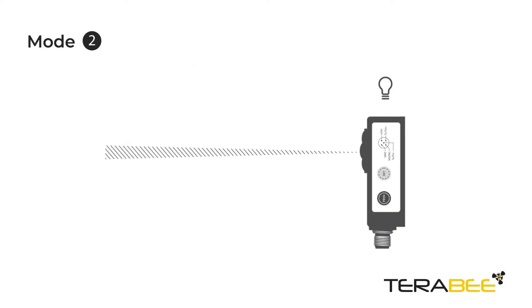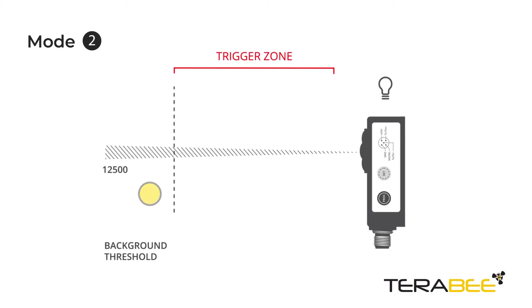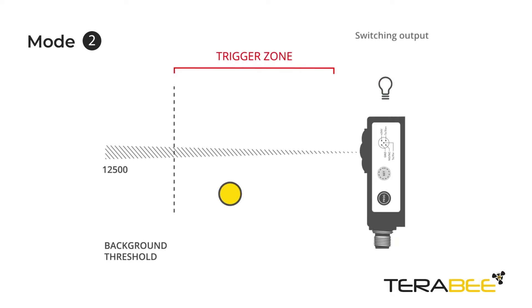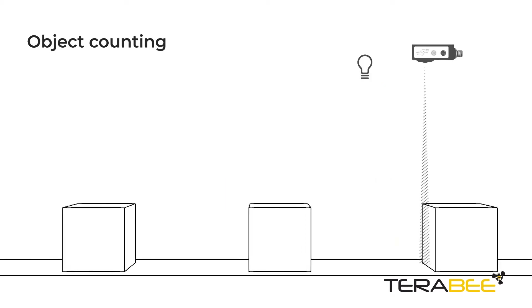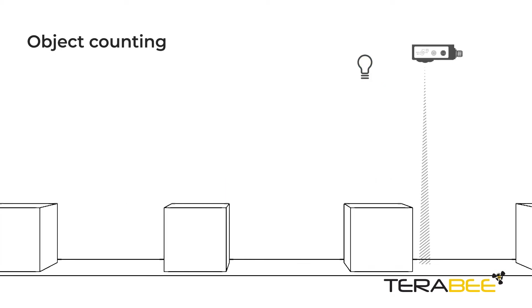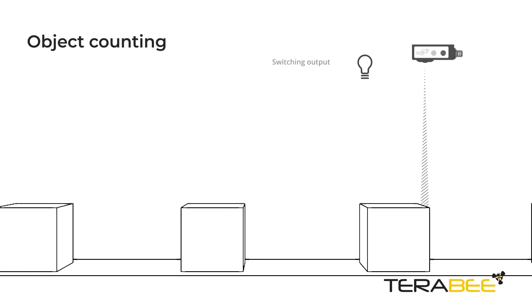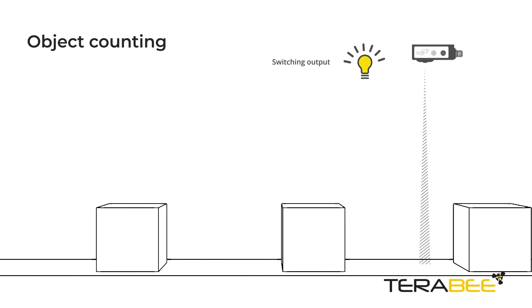In mode 2, a distance threshold is taught in. A switching output is only triggered once an object has left the sensor's threshold area. This is used for simple counting applications or object height monitoring.